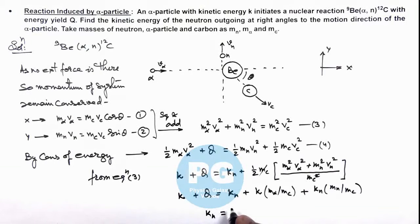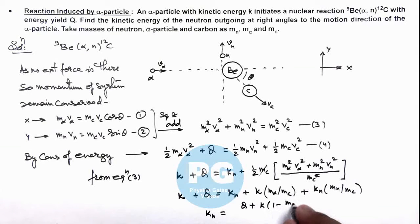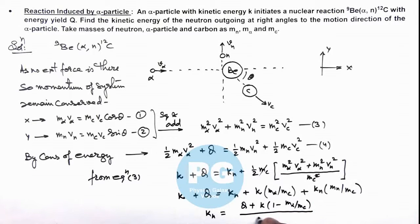The kinetic energy of the neutron K_n that we are required to find is given by: K_n = [q + k·(1 - m_α/m_c)] / [1 + m_n/m_c]. This is the final result of this problem.